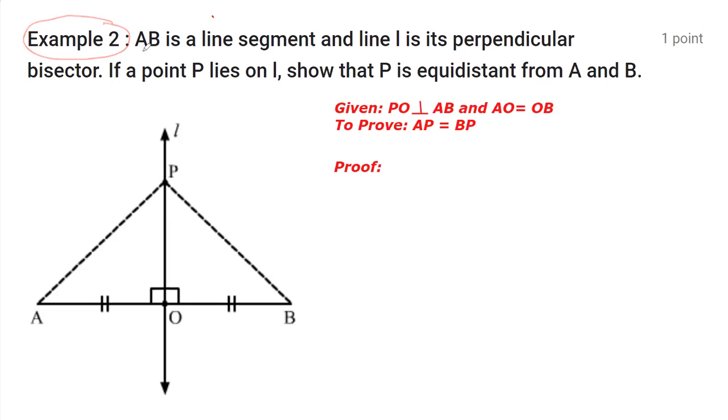Example two: In this question, AB is a line segment where A and B are the endpoints. Line l is the perpendicular bisector. Bisector means the length of AO equals OB. Further, perpendicular means this is 90 degrees on either side.